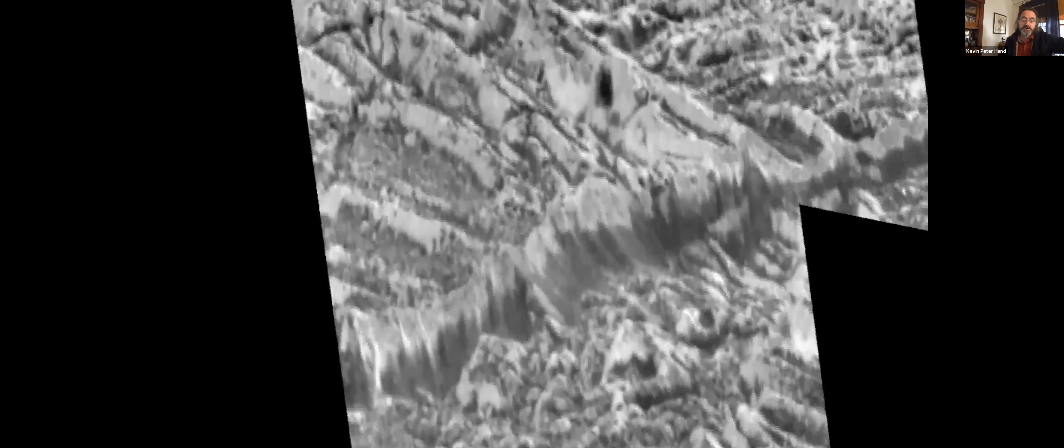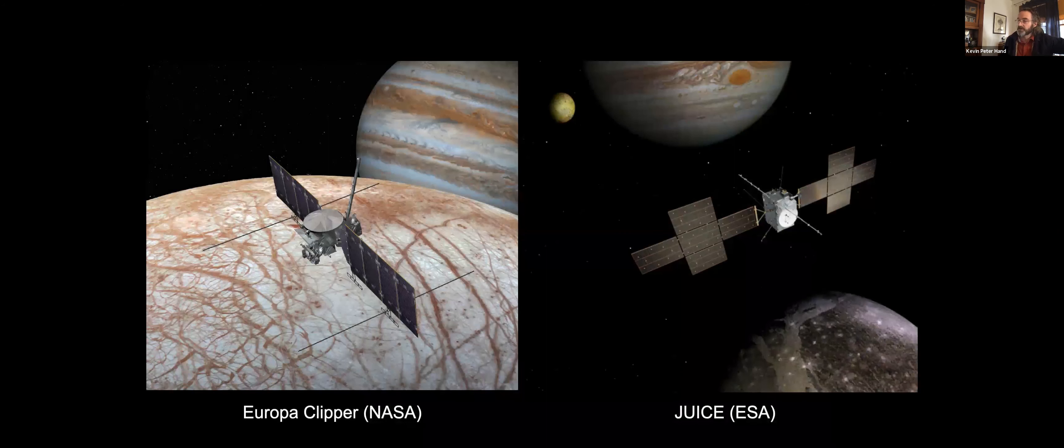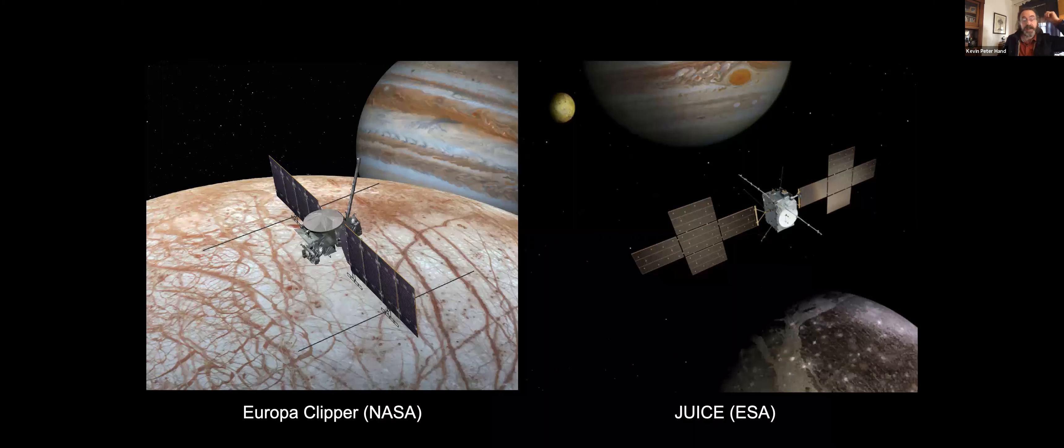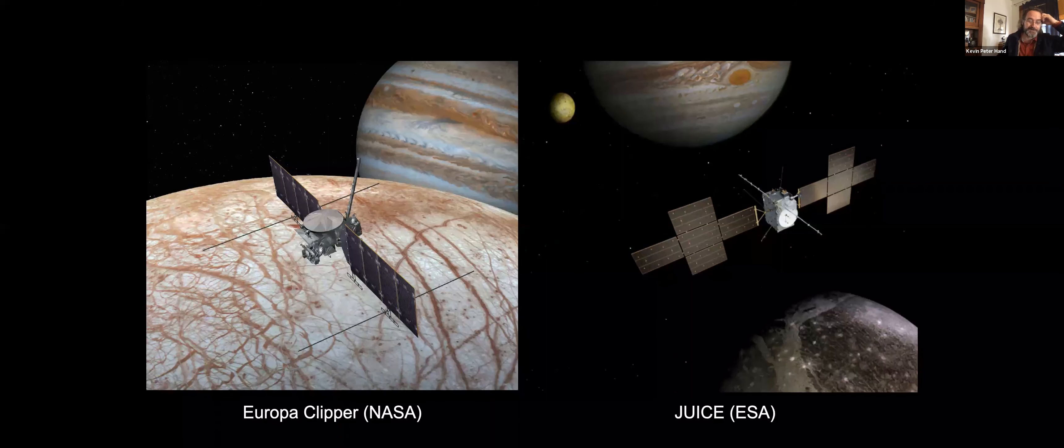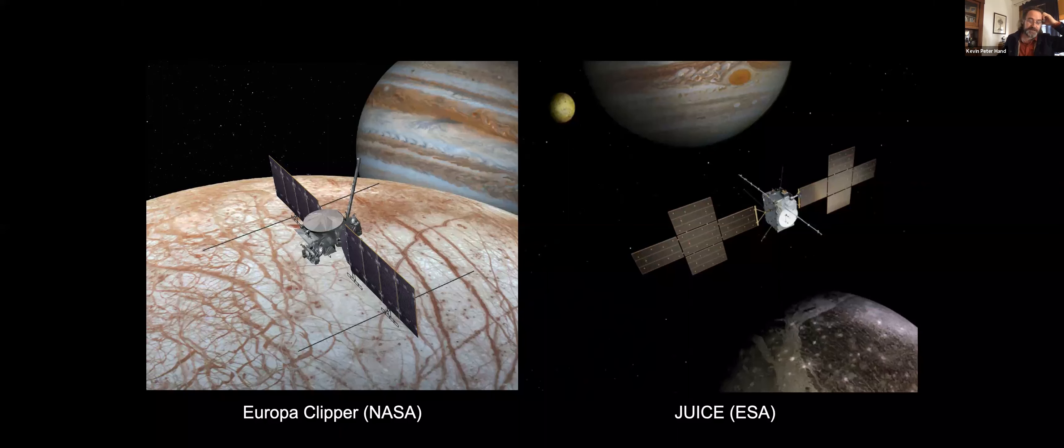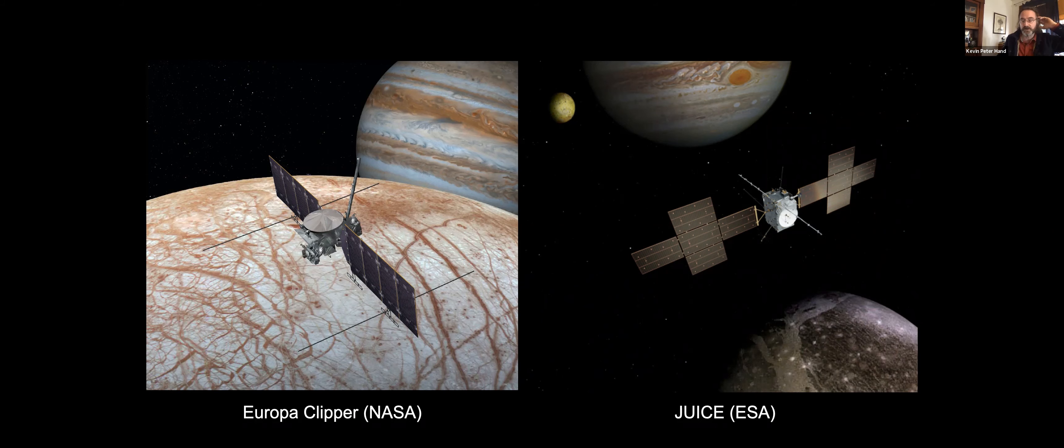After the Juno extended mission, we've got the Europa Clipper mission that is currently under construction at JPL. It will hopefully make it to the launch pad in 2024, arriving out at Jupiter in 2030. Coupled with that, the European Space Agency is moving forward with the Jupiter Icy Moons Explorer. Towards the end of this decade, we will hopefully have these two spacecraft in the Jovian system. Europa Clipper will be in orbit around Jupiter, making 45 flybys around Europa. The JUICE mission will make two flybys of Europa, a number of flybys of Callisto, and then it will go into orbit around Ganymede. Both of those missions are quite exciting.